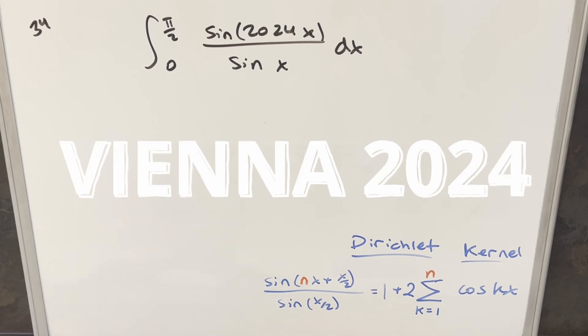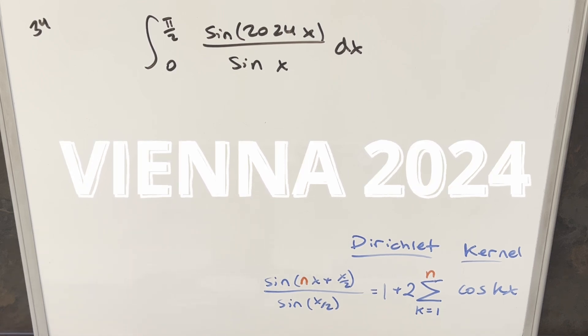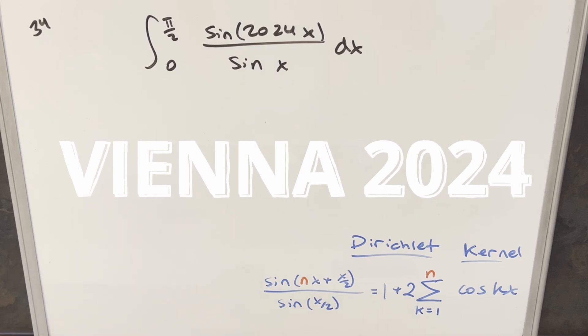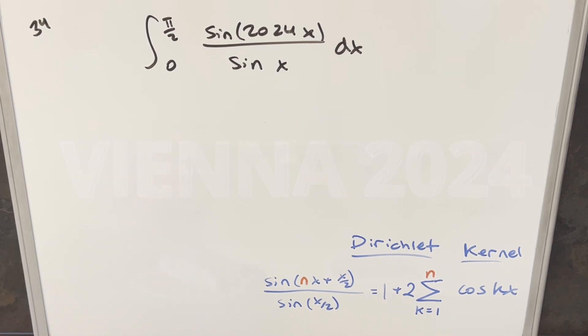We have here today a really interesting integral. This one's from the Vienna Integration Bee 2024, problem 34. We have the integral from 0 to π/2 of sin(2024x) over sin(x) dx.